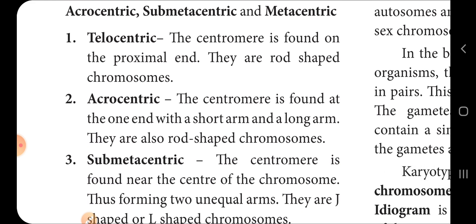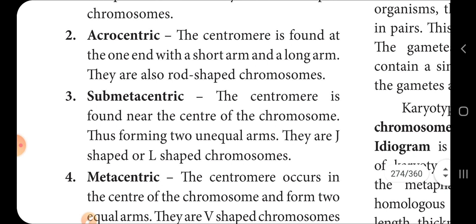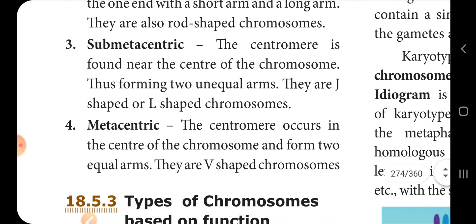Next type: the centromere is found at one end with a short arm and a long arm — these are also rod-shaped chromosomes. Another type: the centromere is found near the center of the chromosome, and two equal arms form a V-shaped chromosome.